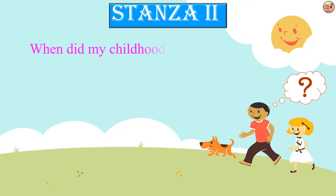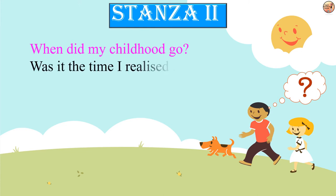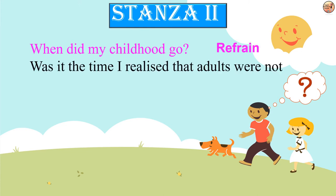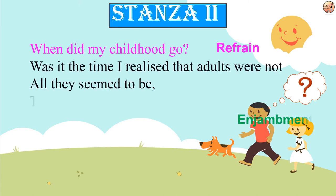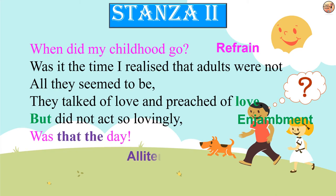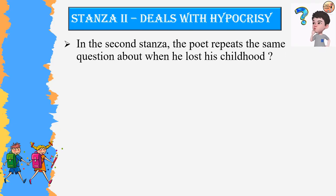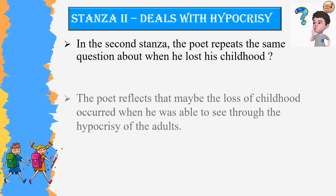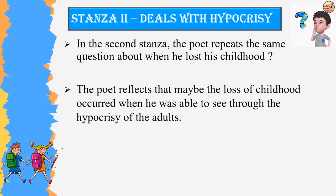Stanza 2: 'When did my childhood go? Was it the time I realized that adults were not all they seemed to be? They talked of love and preached of love but did not act so lovingly. Was that the day?' In the second stanza, the poet repeats the same question about when he lost his childhood. He reflects that maybe it occurred when he was able to see through the hypocrisy of the adults.